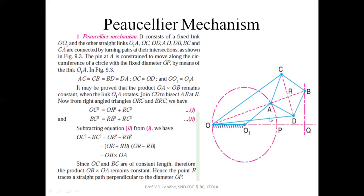If you see these four links, the structure will be a rhombus. The O₁A link has rotary motion which converts into oscillating motion of this rhombus structure, so point B traces an exact straight line. Since OC and BC lengths are the same, the product OB × OA is constant. If this relation is satisfied based on length configuration, then the Peaucellier mechanism traces an exact straight line path.